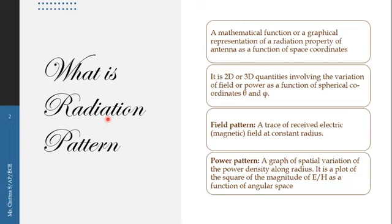Radiation patterns are either mathematical functions or graphical representations of how the radiation of an antenna appears as a function of space coordinates. We assume the space around an antenna to be a sphere, which means we consider the spherical coordinate system which has three coordinates: rho, theta, and phi. We draw the radiation pattern as a function of the space coordinates theta and phi, where rho represents the radius.